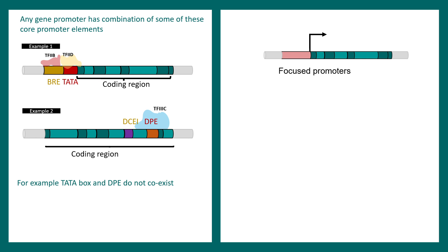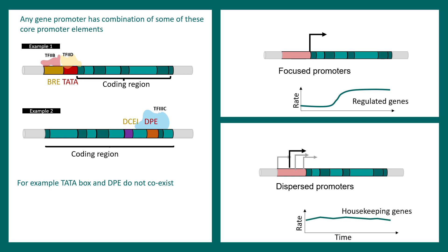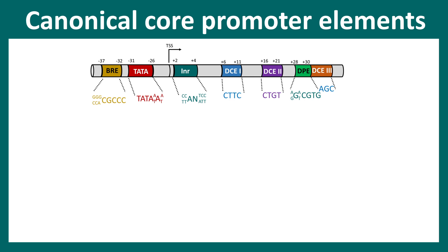There are two different classes of promoters: focused promoters and dispersed promoters. Focused promoters have a very unique transcription start site at one particular point, and these are seen for regulated genes. Dispersed promoters have transcriptional start sites at many locations, and these are typical of housekeeping genes.